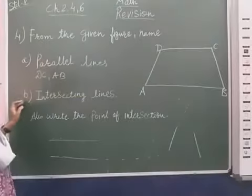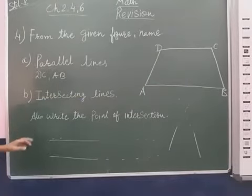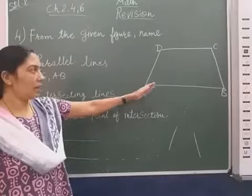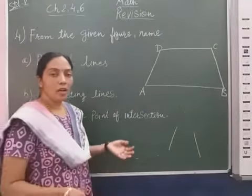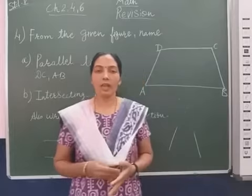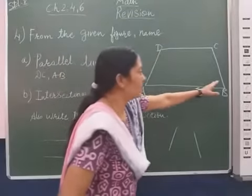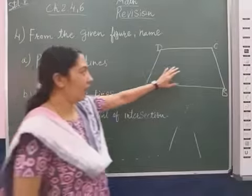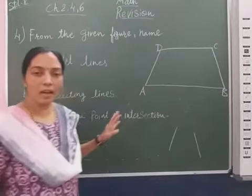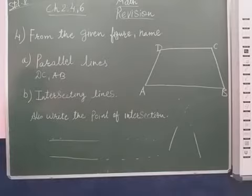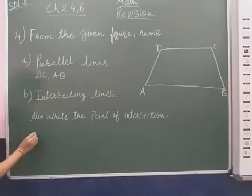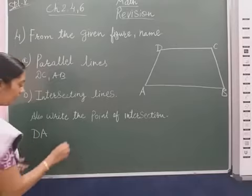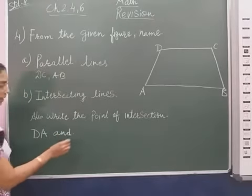Next, intersecting lines. The point of intersection — intersecting lines means they are going in one direction and they meet at that point. So these two lines are intersecting lines. We will give the name: line DA and line AB — these two lines are intersecting lines.